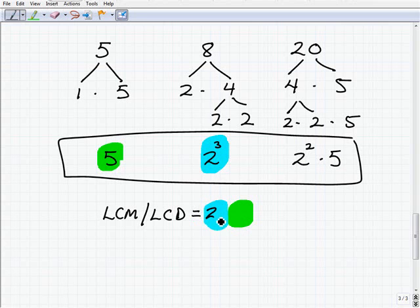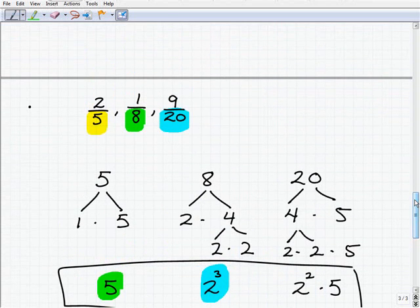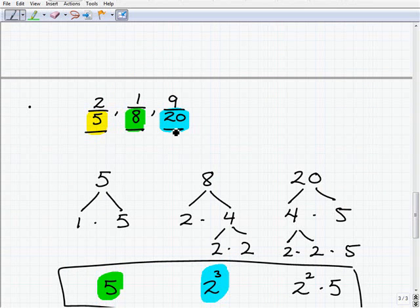Let's go ahead and write this into our final answer. So this is 2 cubed times 5, which of course is 2 cubed is 8. 8 times 5, which is 40. Okay, so our LCD or LCM of these numbers is 40. Let's go back here. So if I ask you 5, 8, and 20, what's the lowest number that all of them divide into, all three of those numbers, in fact, it would be 40. All right, so our LCD is 40.